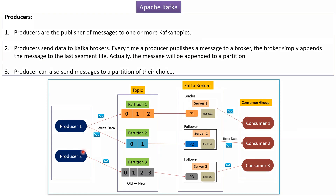Here you can see the producers. A producer is also called a publisher. A publisher publishes messages to one or more topics. The producer sends data to Kafka brokers. Every time a producer publishes a message to the broker, the broker simply appends the message to the partition at the end. A producer can also send messages to a partition of their choice.